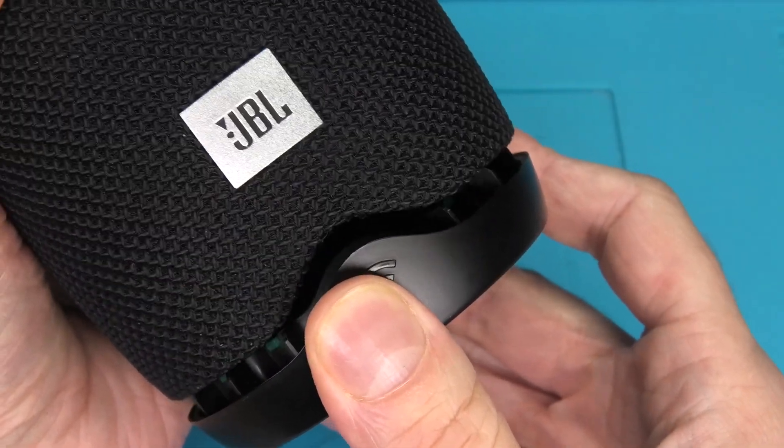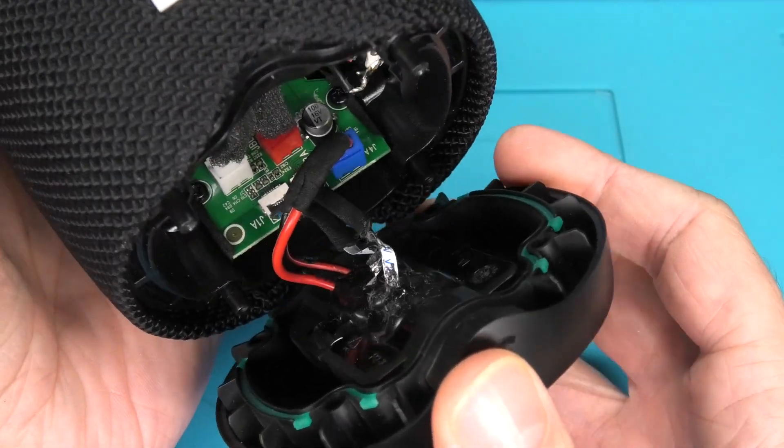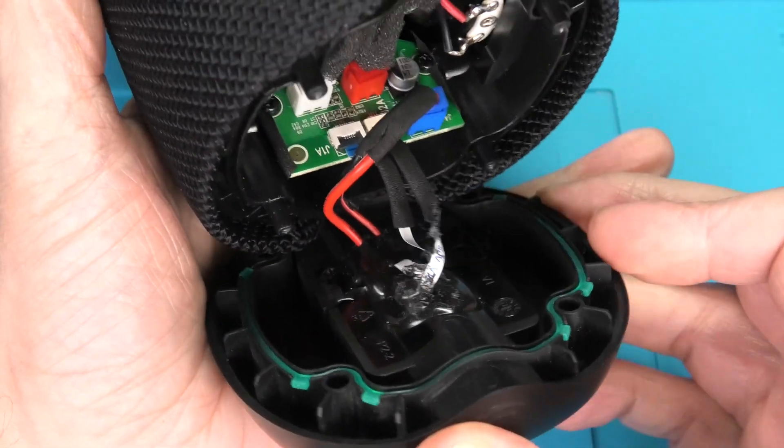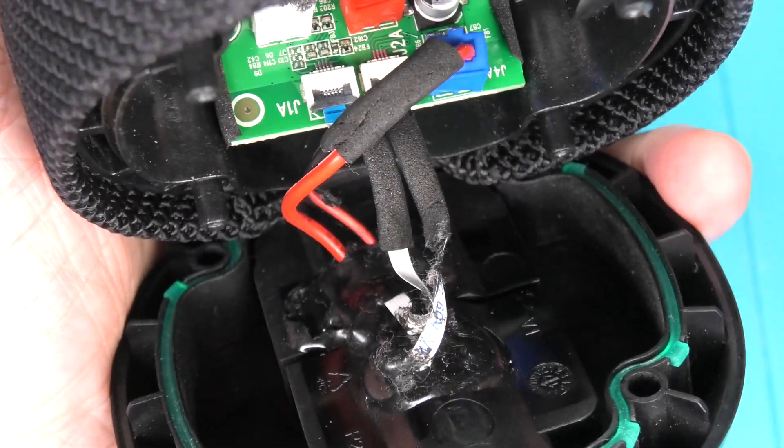Now once we have removed all the screws we want to open up the plastic cover on the bottom. And we want to do this really carefully because there is a whole bunch of fragile cables connected between the speaker and then the bottom.